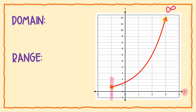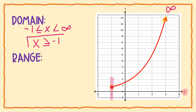So you write negative 1 is less than or equal to x — because of the colored-in circle — is less than positive infinity. But since you have positive infinity, you don't need to write that part. It simplifies to x is greater than or equal to negative 1.